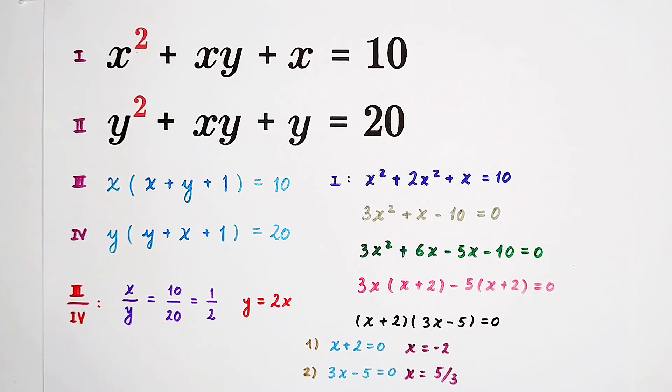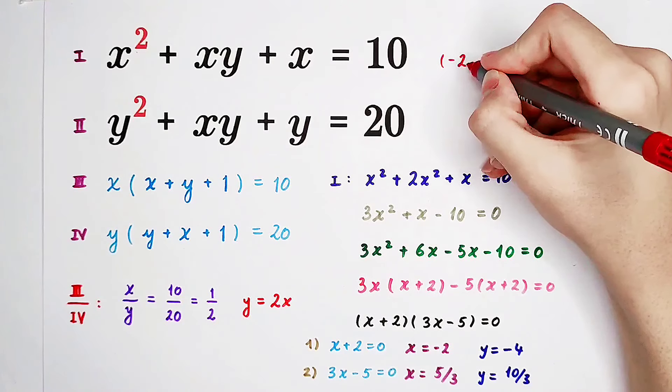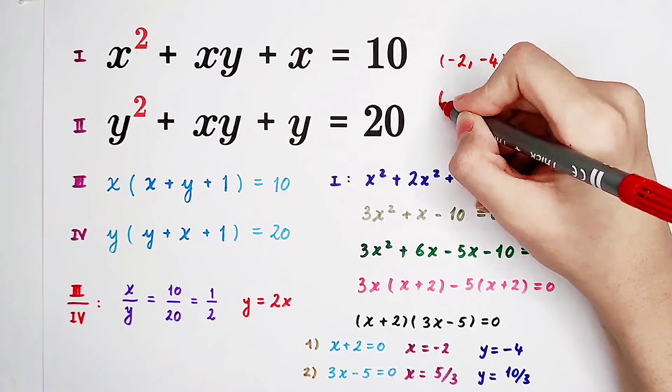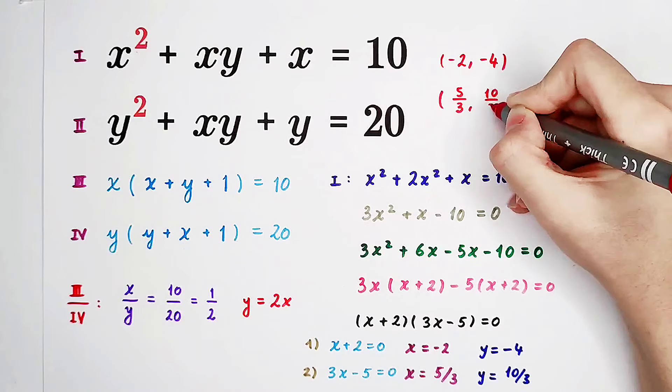And then for y, since y equals 2x: in the first case, y equals negative 4. In the second case, y equals 10 over 3. So we get two solution pairs: (negative 2, negative 4) and (5 over 3, 10 over 3).